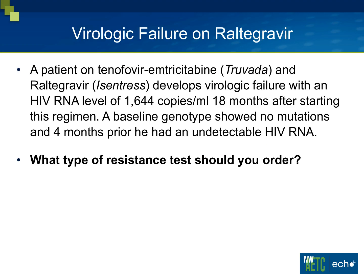I'm going to jump right in and talk about raltegravir resistance because this is the drug we have the most clinical experience with and the most data regarding resistance. Let me start by presenting a clinical scenario of an individual who has virologic failure on raltegravir. This is a patient taking tenofovir/emtricitabine (Truvada) and raltegravir (Isentress), who developed virologic failure with a viral load of 1,644 copies 18 months after starting this regimen. Importantly, a baseline genotype had shown no mutations, and four months prior he had an undetectable viral load. The first practical question is: how do you evaluate integrase resistance, and is it any different than what you normally do?